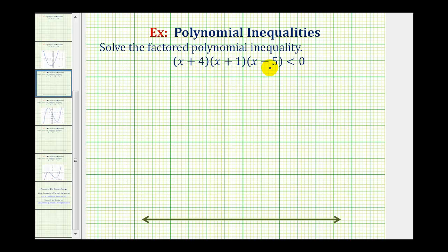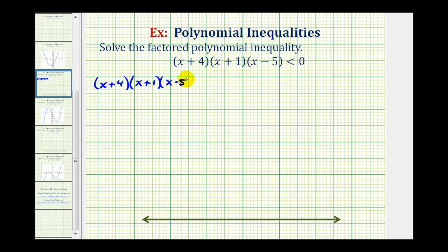The first step in solving this inequality is to determine which x values make this product equal to zero. We'll use those values to form intervals on the number line and then test to see which interval actually satisfies the given inequality. So the first step is to solve the equation: the quantity x plus four, times the quantity x plus one, times the quantity x minus five, equals zero.